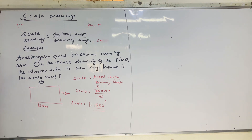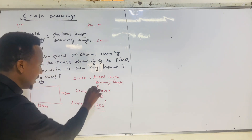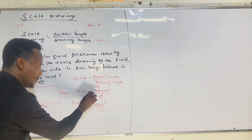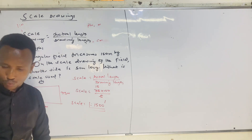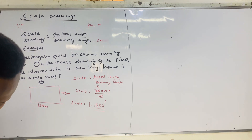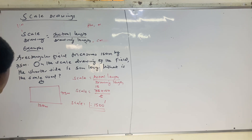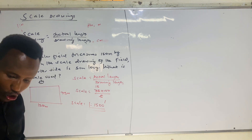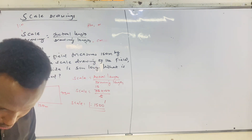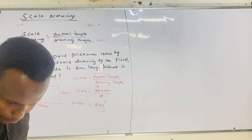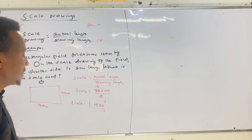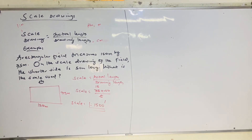Know that apart from the formula, the bigger unit is always converted into the smaller unit — that's how we get the scale. If the actual unit is in kilometers, you multiply by 100,000. Don't forget that. Now let's see a situation where the unit is in kilometers.